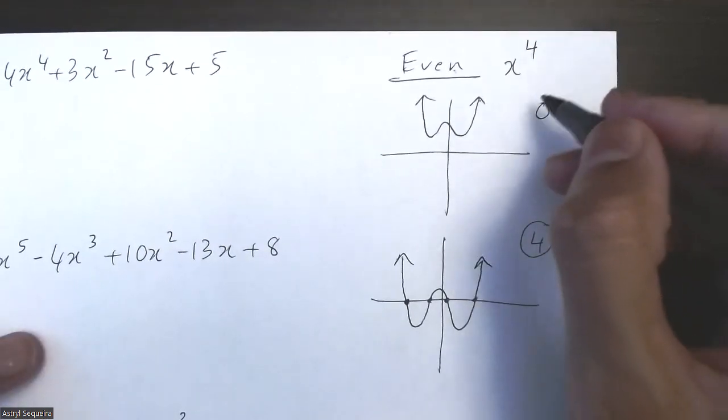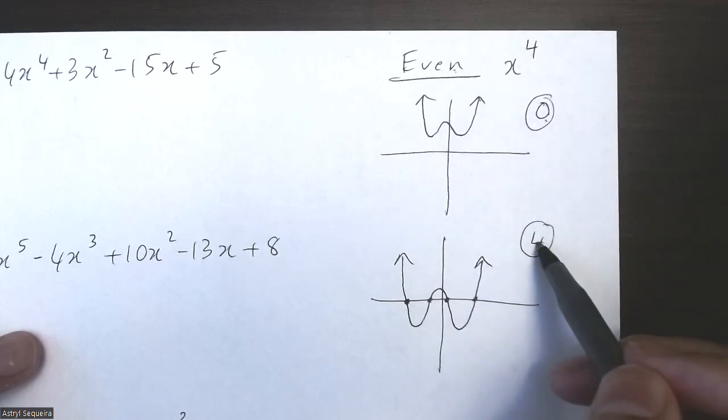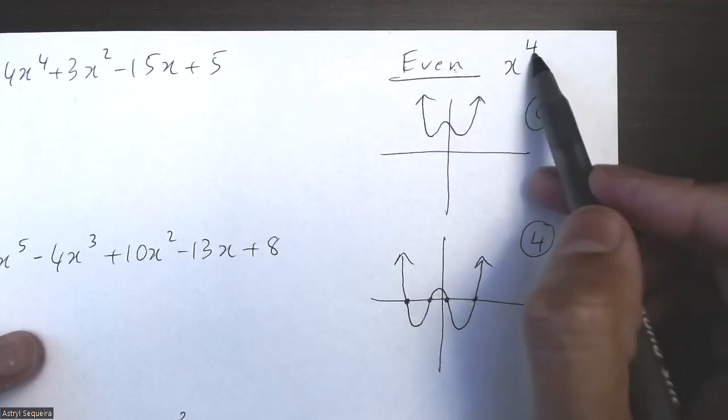So if you look at an even function, the minimum number of zeros is always zero, and the maximum number of zeros is the same as the degree.